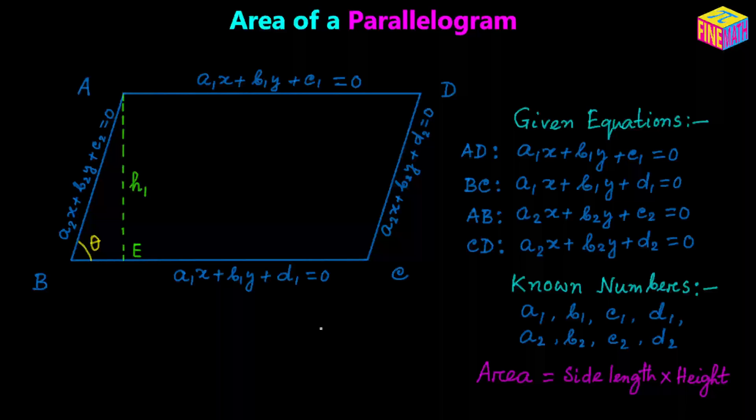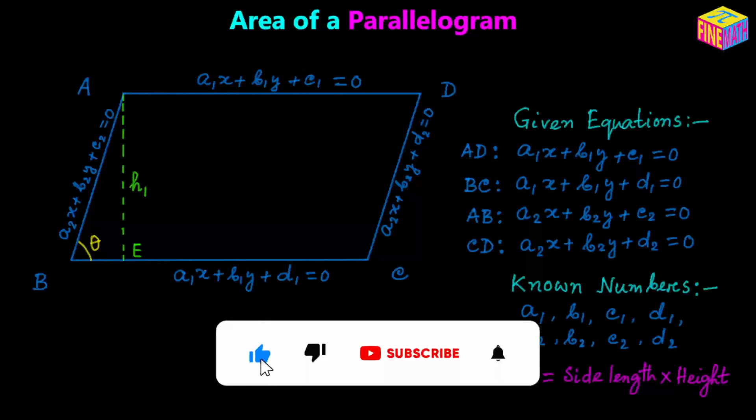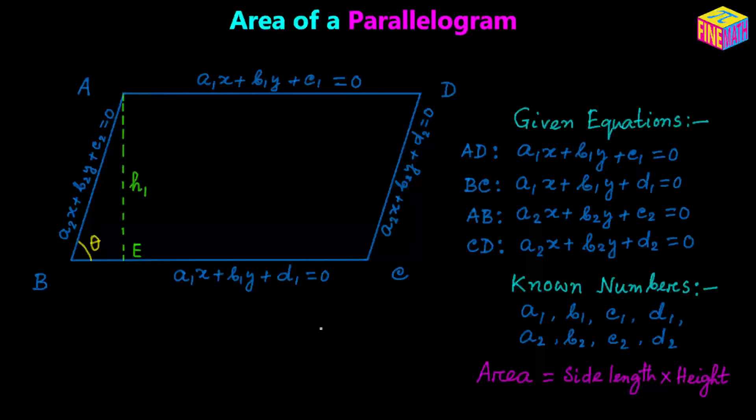Here in the diagram I have a parallelogram ABCD. The equations of each of the four sides have been provided. The equation of side AD is A₁X + B₁Y + C₁ = 0, and its parallel side BC's equation is A₁X + B₁Y + D₁ = 0. Similarly, the equation of side AB is A₂X + B₂Y + C₂ = 0, and its parallel side CD's equation is A₂X + B₂Y + D₂ = 0. Because all four equations have been provided, we know the coefficients and the constant terms.